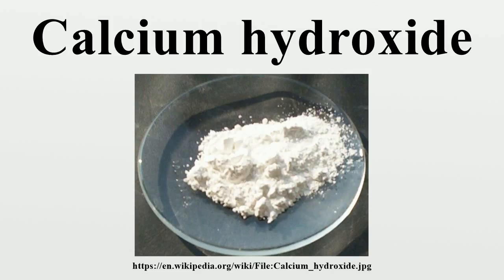Ca(OH)₂ → Ca²⁺ + 2OH⁻. At ambient temperature, about 1 gram of calcium hydroxide can dissolve in pure water to produce an alkaline solution with a pH of about 12.5. Calcium hydroxide solutions can therefore cause severe chemical burns.